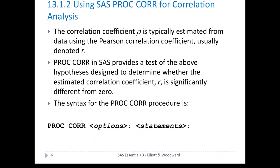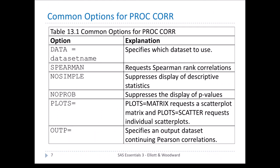The syntax for PROC CORR is similar to other procedures: PROC CORR, then options, semicolon, and then some optional statements. Common options include: DATA= to specify the data set; the SPEARMAN option to request Spearman rank correlations; NOSIMPLE to suppress descriptive statistics; NOPROB to suppress p-values; PLOTS=MATRIX to request a scatterplot matrix; PLOTS=SCATTER for individual scatterplots; and OUTP= to specify an output data set containing Pearson correlations.